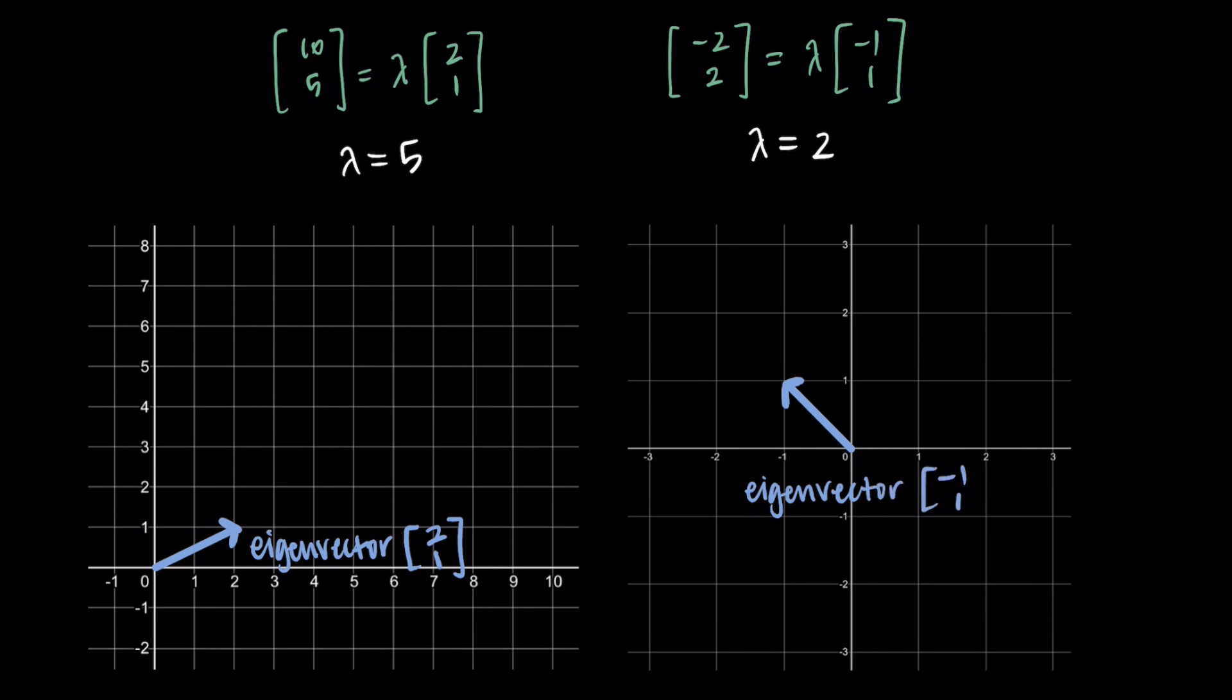If we think about what A as a transformation does to these vectors, what A does to the first eigenvector is that it scales it by 5 and it becomes [10, 5]. This corresponds to the eigenvalue of 5, since we're taking that vector and just scaling it by 5.